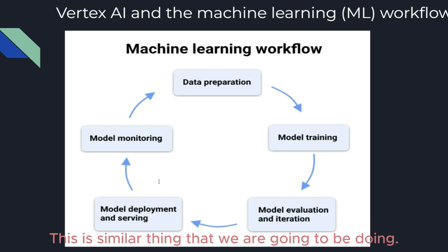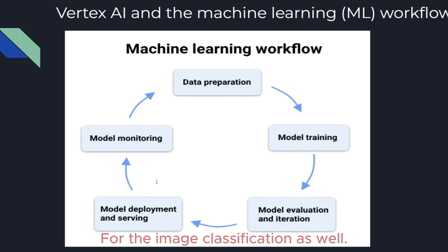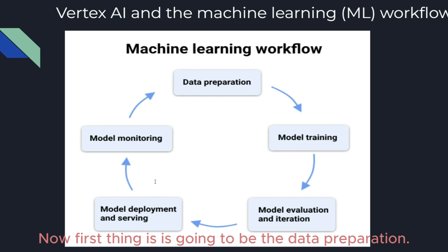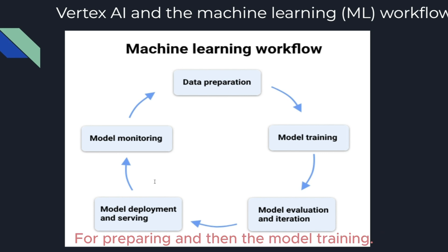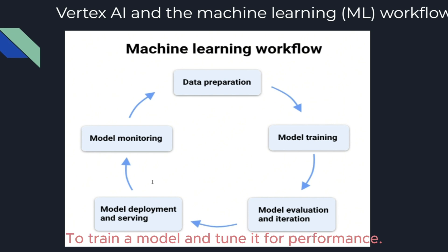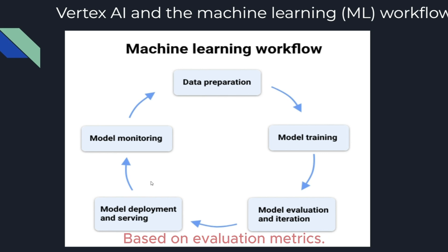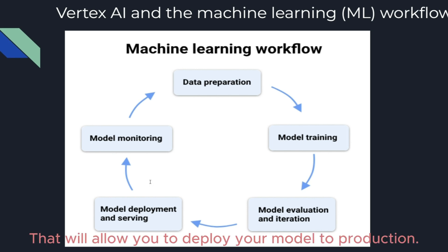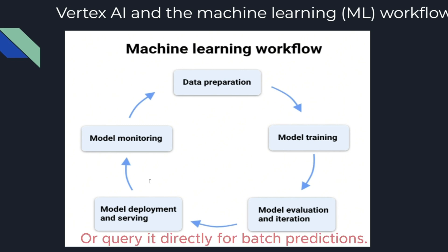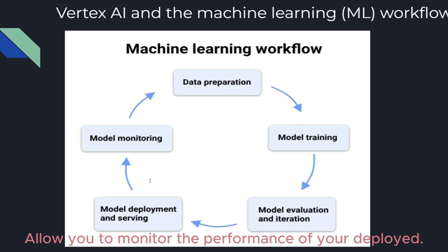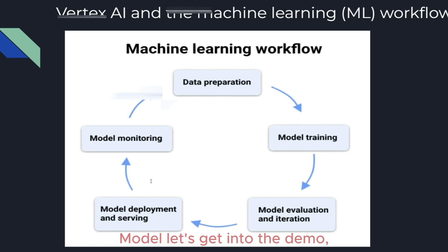In this diagram I'm showing the multiple steps in a workflow — this is similar to what we are going to do for image classification. First is data preparation, then model training where we choose and train a model and evaluate performance, then model evaluation and iteration to make adjustments, then model serving to deploy to production for online or batch predictions, and finally monitoring the performance of the deployed model.